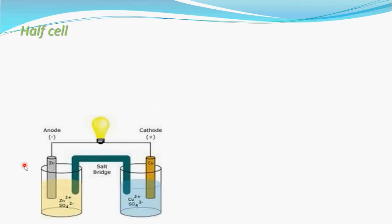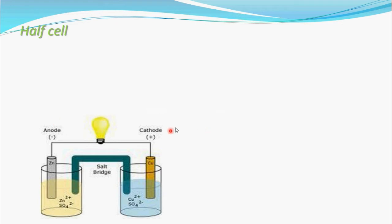In part 4 of this electrochemistry video, you have seen the whole Daniel cell. In this, only this part is called a half cell, that is the anode. And this part is also called a half cell, that is the cathode. This anode is also called the oxidation half cell, and this cathode is also called the reduction half cell.